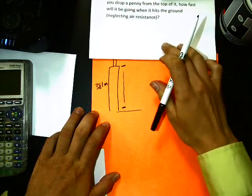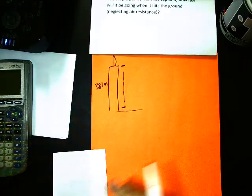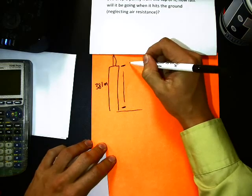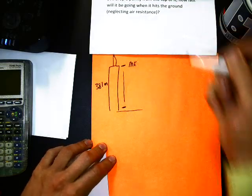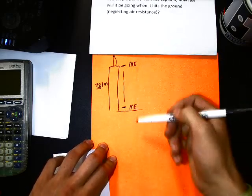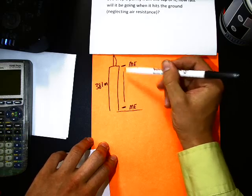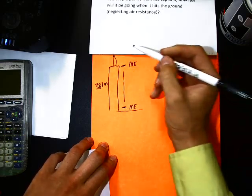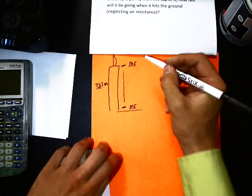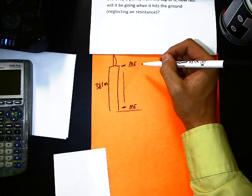So we're going to use that and we'll draw a little picture up here. So we have Empire State Building, it's got a little needle up top. That's a really bad Empire State Building. And it is 381 meters tall. It has a little penny that we're going to drop from the top of it. And the penny is going to fall down here. And right before it hits the ground, we want to know how fast it's going to be going.